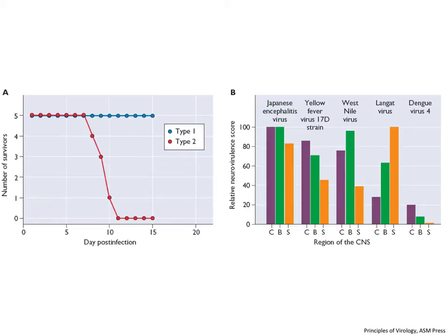On the right is a different kind of readout: lesions in the central nervous system of animals — mice infected with viruses including yellow fever and West Nile virus. You take sections of the cerebrum, brain stem, and spinal cord, look at them under a microscope, and look for lesions caused by the virus. A trained pathologist can tell what the virus does — it causes cell death, vacuolization, and other effects. You put a number on those lesions to calculate what's called the neurovirulence score.